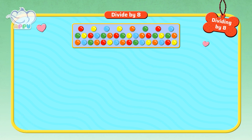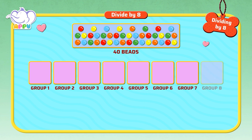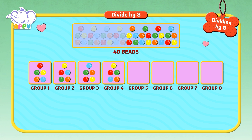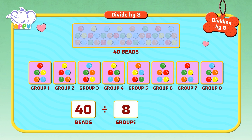Let's divide 40 beads into 8 groups. How many beads are there in each group? So when we group 40 beads in 8 groups, we get 5 beads in each group. So we write 40 divided by 8 equals 5.